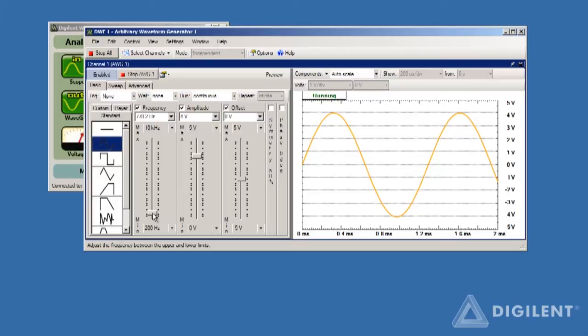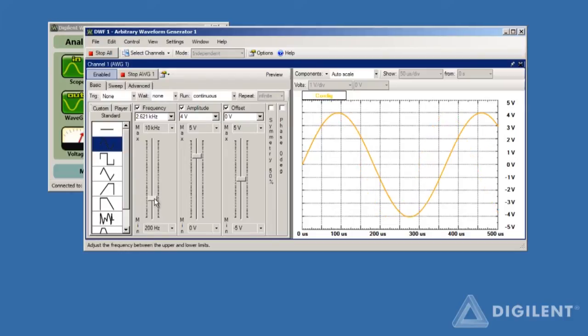Increasing the frequency reduces the time between peaks of the sinusoid, which means that the signal changes more quickly so the tone becomes higher. Alternately, reducing the frequency produces a lower tone.